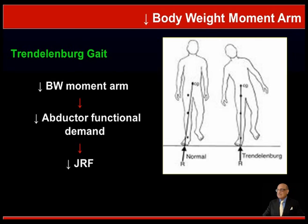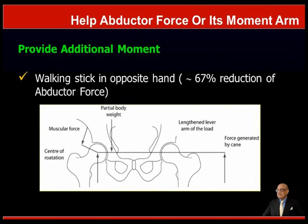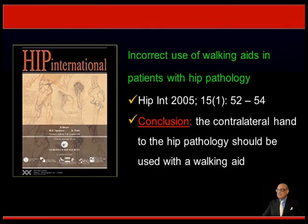In the management of hip disorders, our first step is reduction of body weight. We decrease the body weight moment arm—for example, in the Trendelenburg gait there is a decreased body weight moment arm leading to a decrease in the abductor functional demand and a decreased joint reaction force. This also helps the abductor force or its moment arm, such as the use of a walking stick in the opposite arm, which will lead to a 67% reduction of the abductor force. Incorrect use of walking aids in patients with hip pathology will not help such a patient. An article concluded that the contralateral hand to the hip pathology should be used with a walking aid to reduce the pressures across the hip joint.